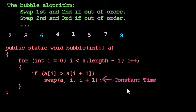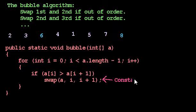It occurs to me that it is perhaps misleading that the very last thing we wrote was constant time, given that we know the entire thing is linear time. We knew that swap was constant time, but that bubble was linear time.